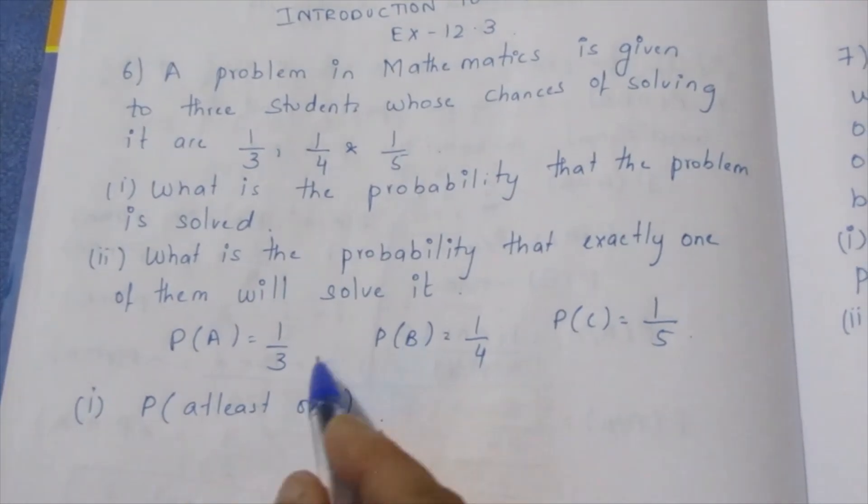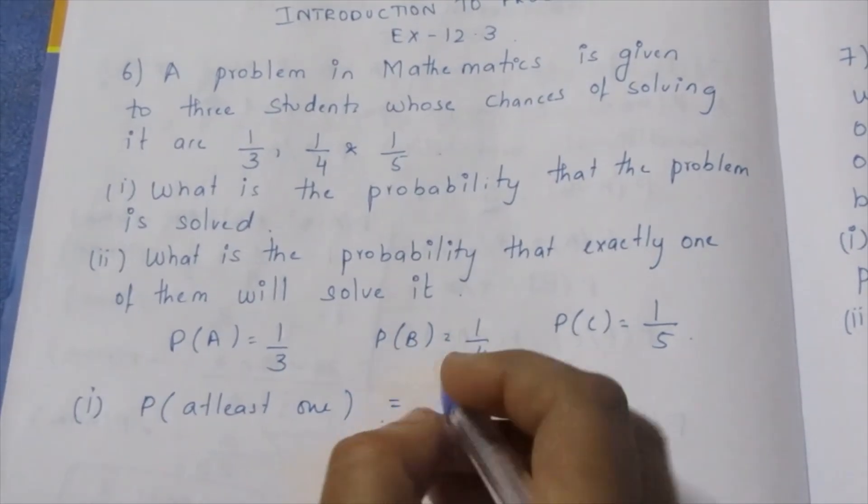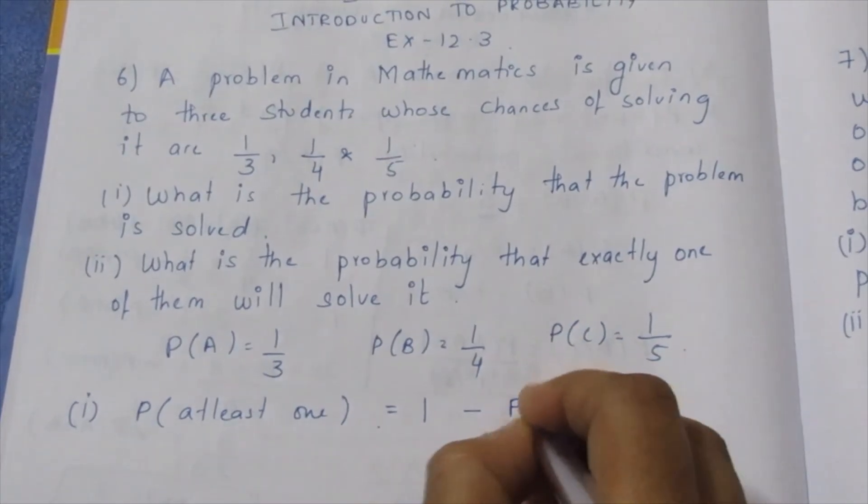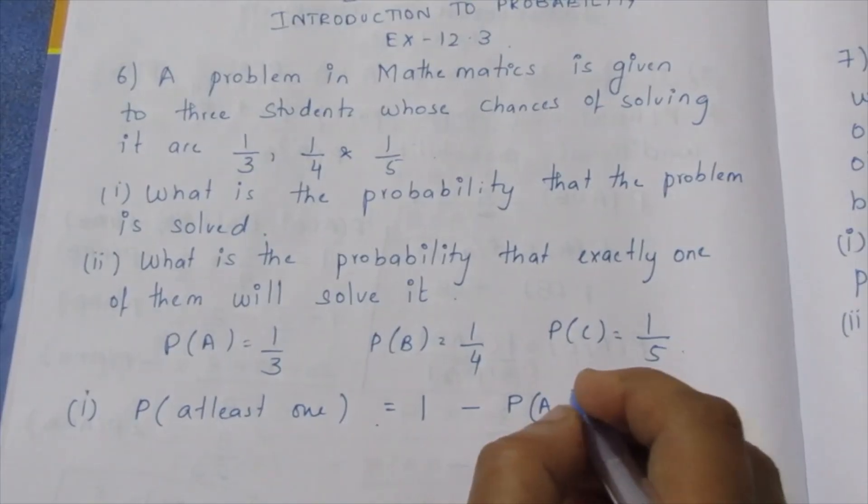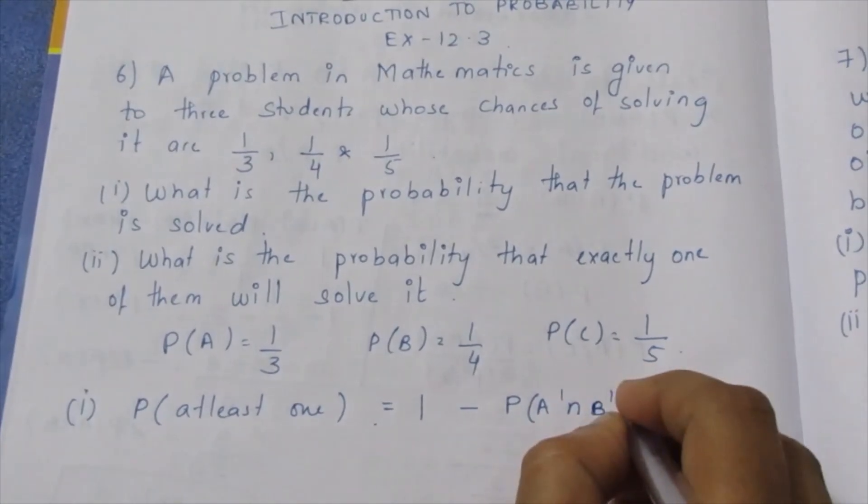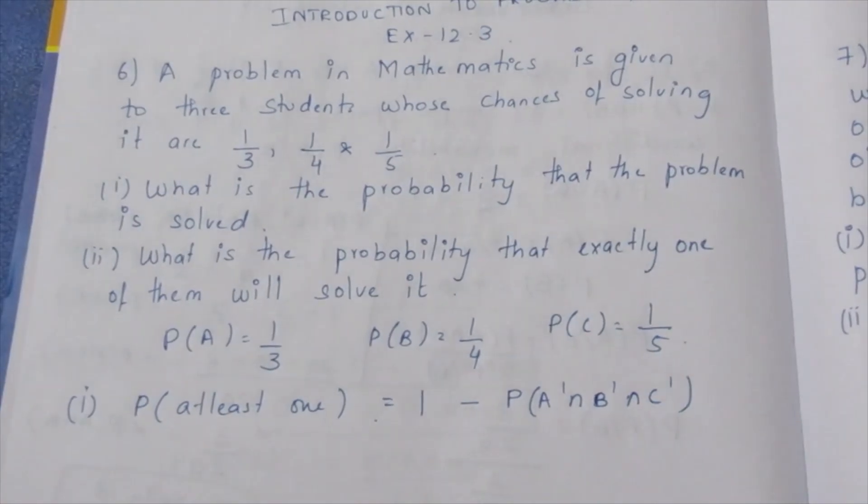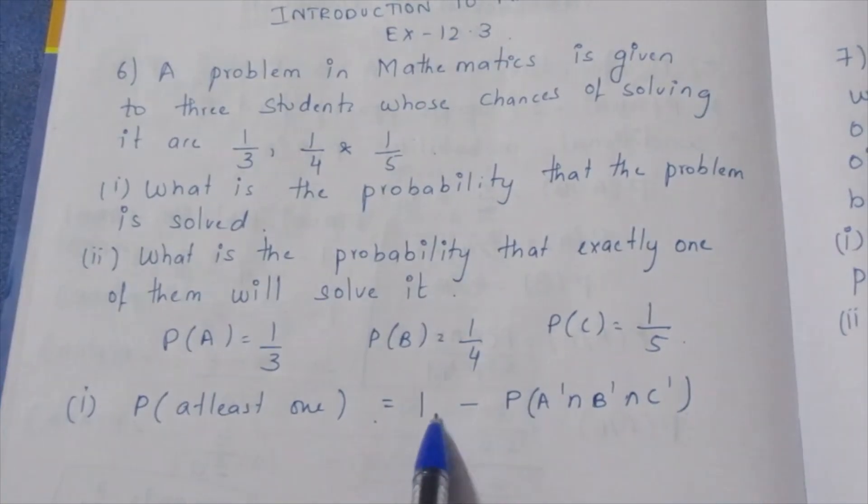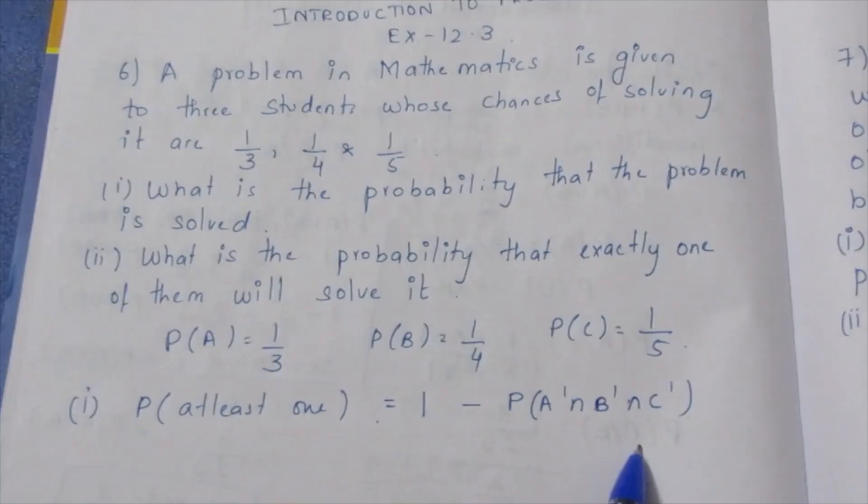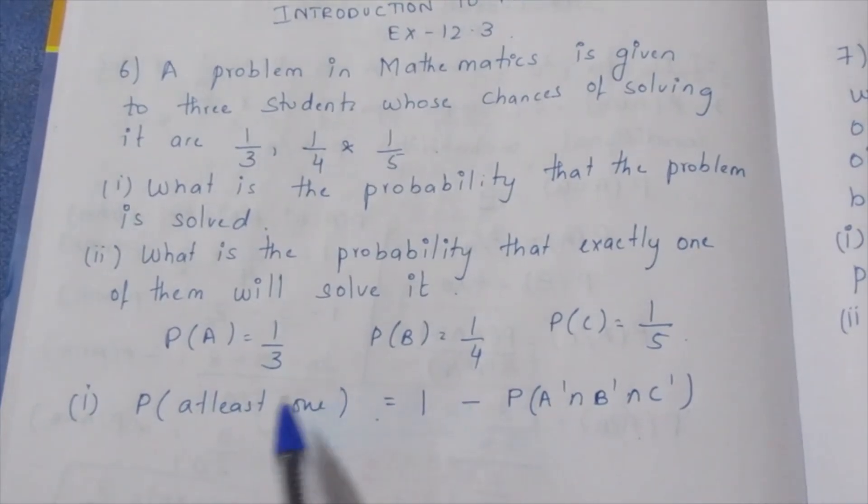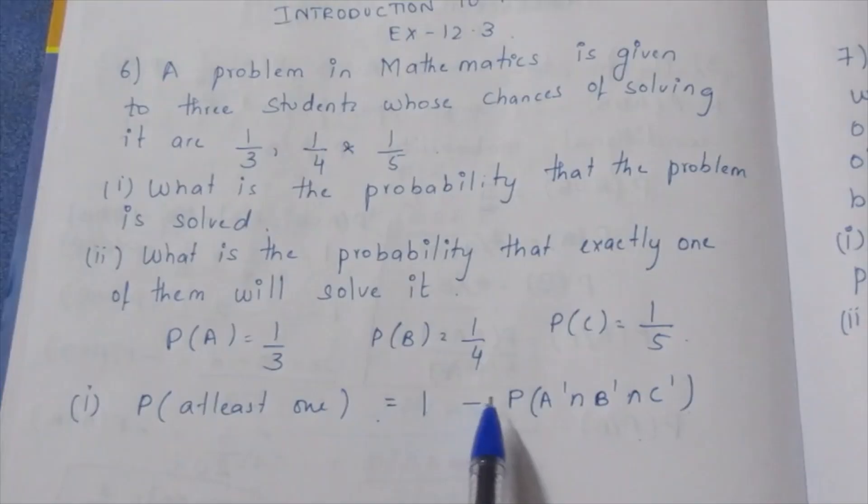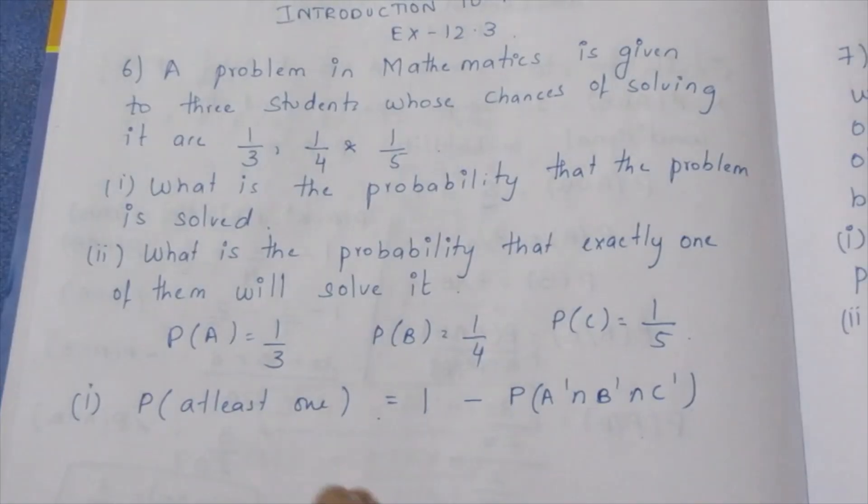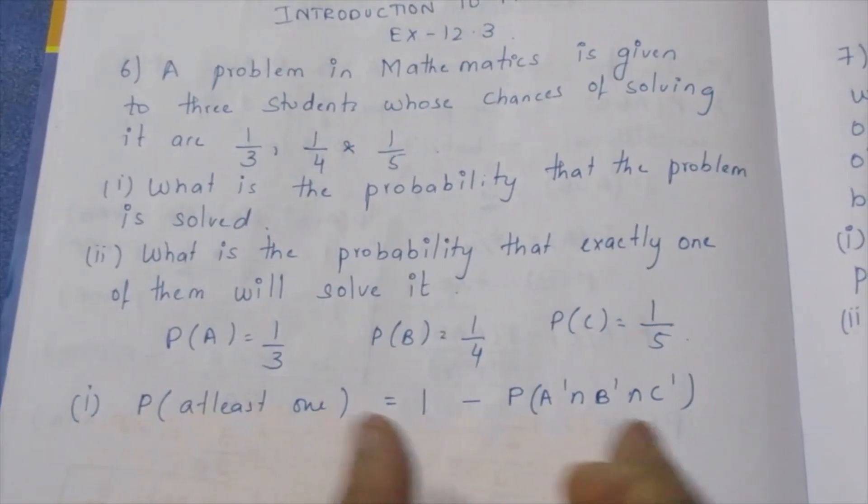At least 1 means one, two, or all three can solve this. How you do this is 1 minus the probability that no one solved the problem. The overall is 1 minus P of the union. That is the intersection. If you do this, you will get it.